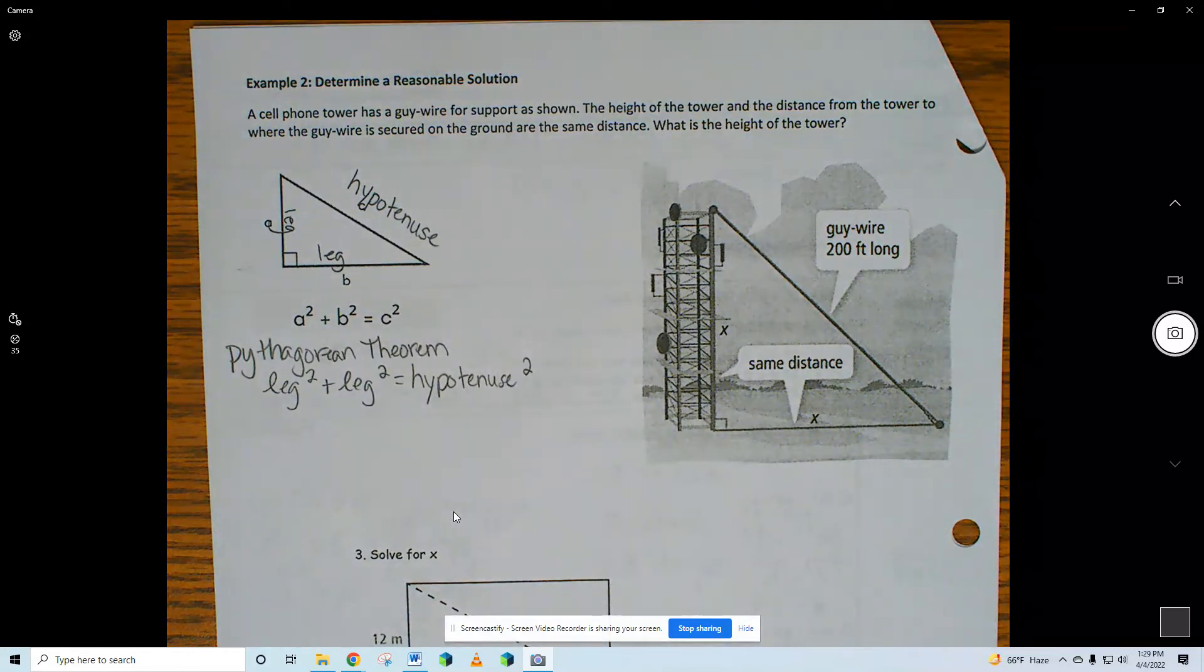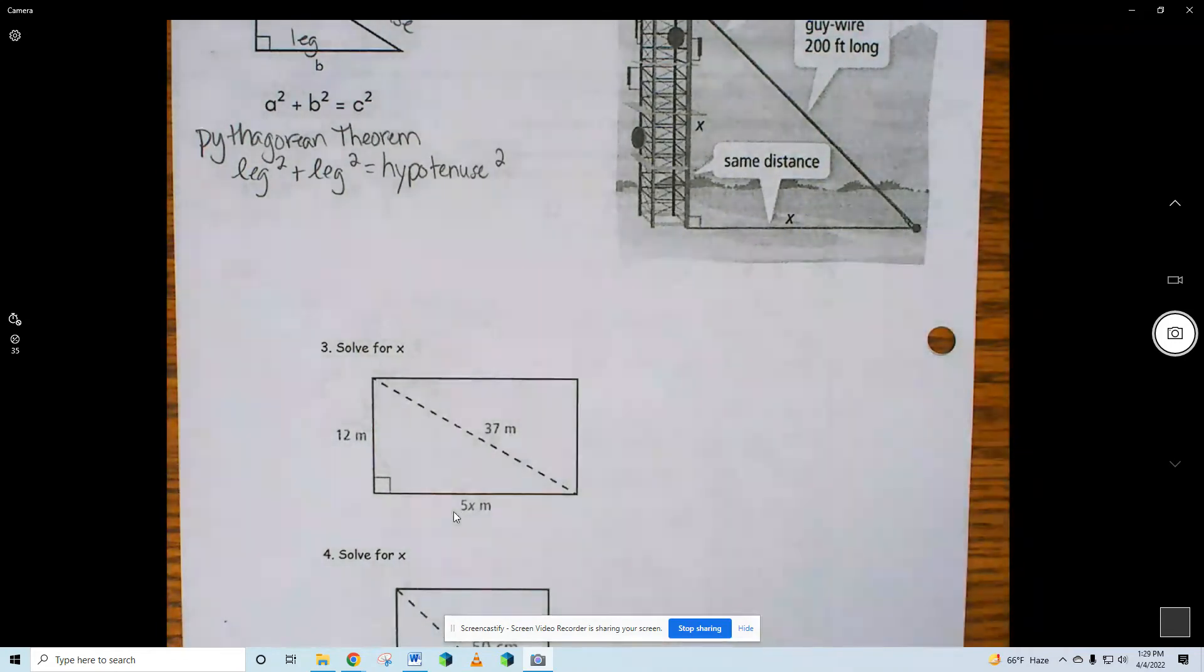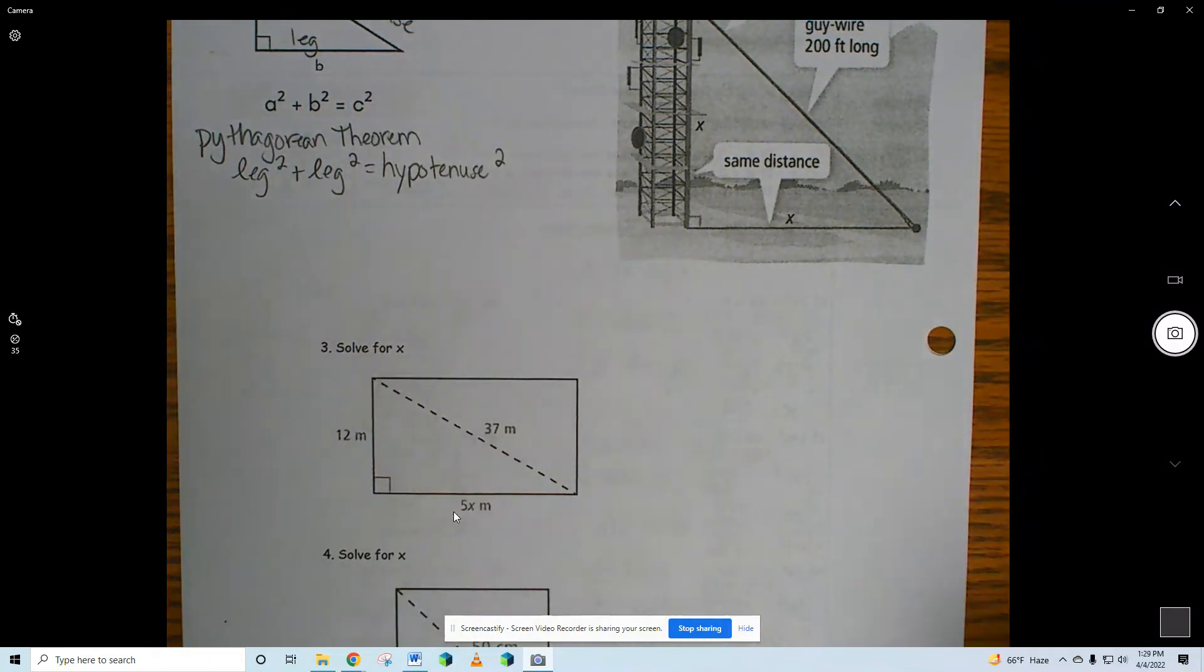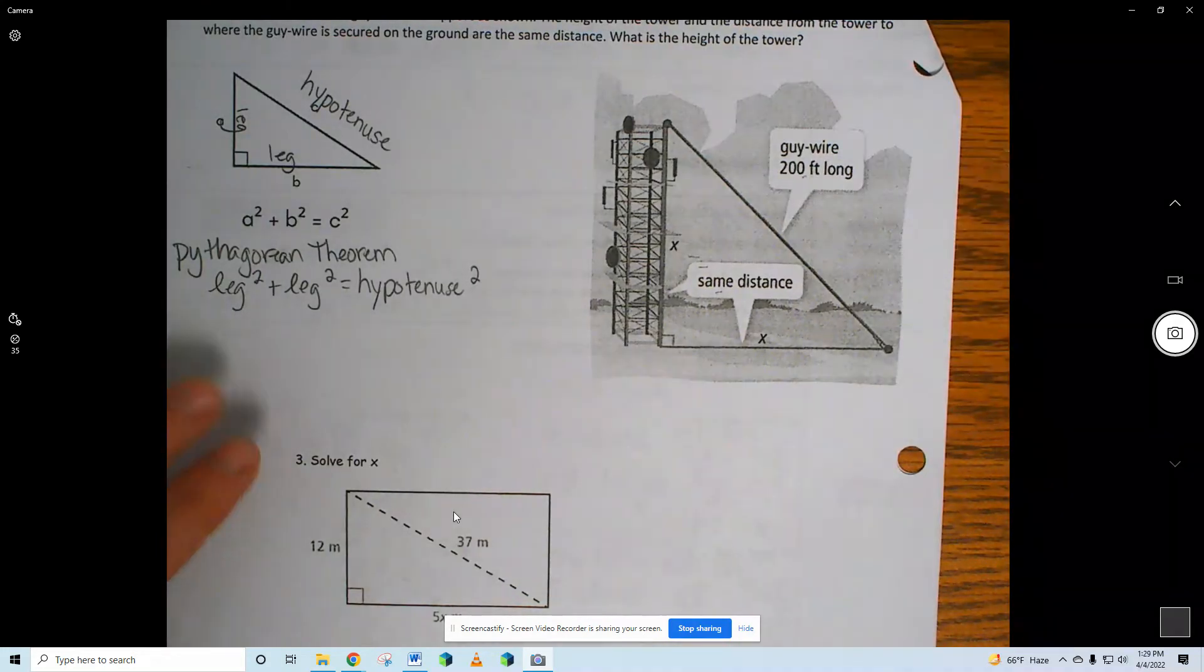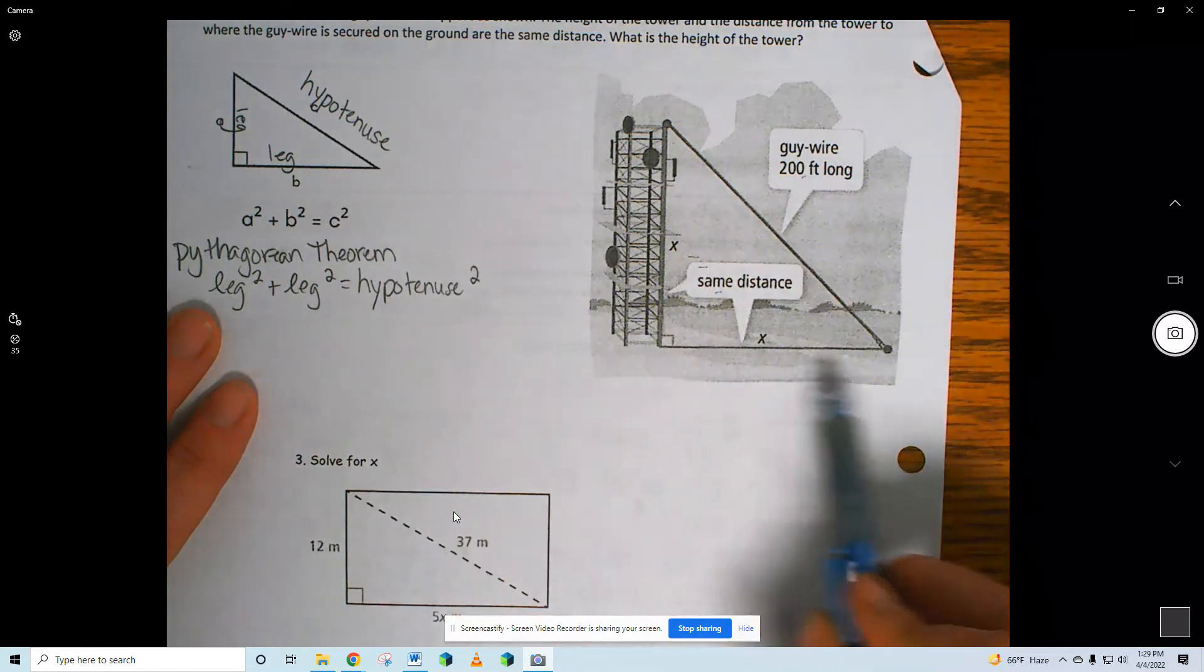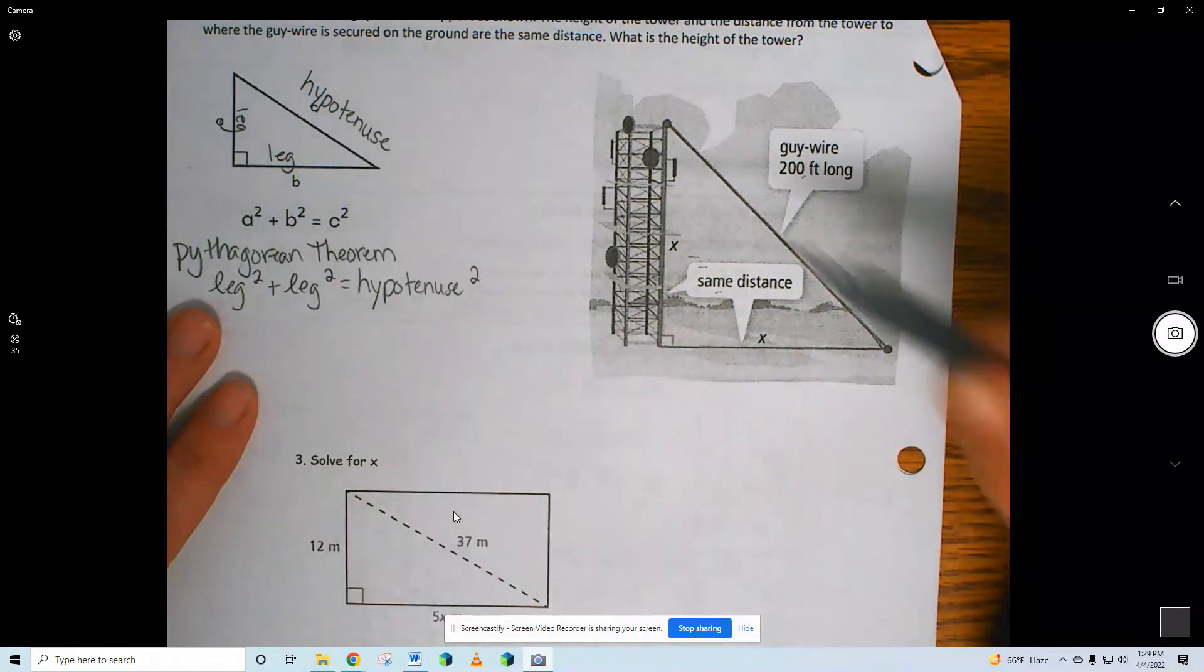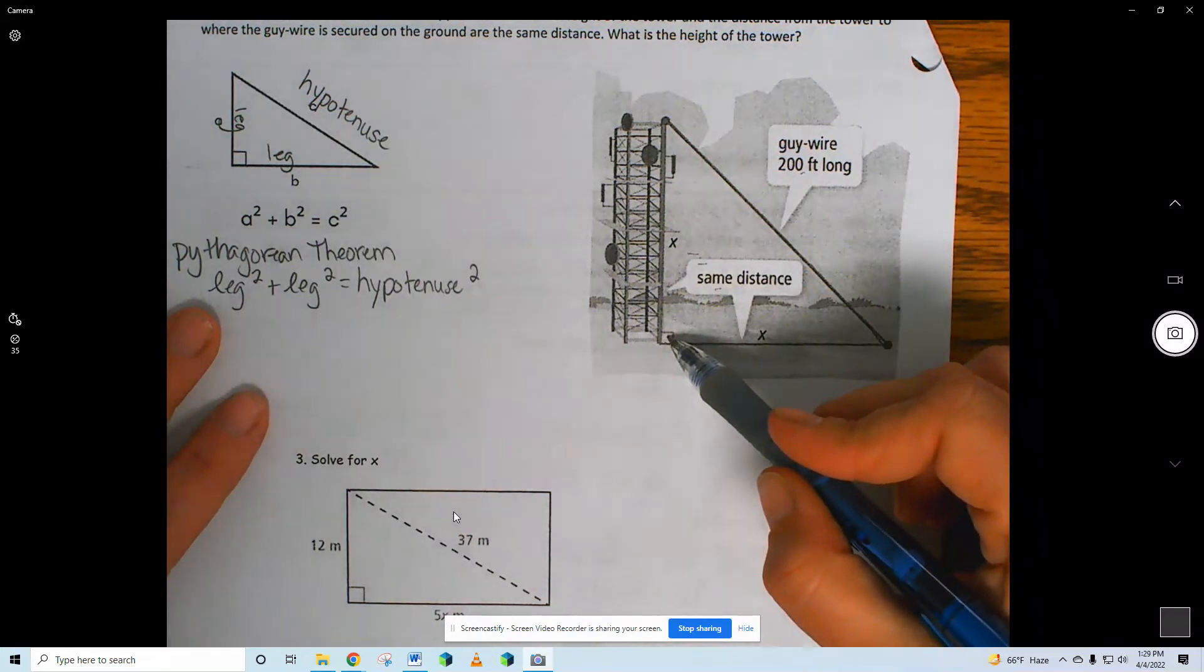What we're going to do is we're going to practice this formula in these two problems, number three and four. If our job is to solve for x, we're just going to set it up like a normal Pythagorean theorem problem. Twelve meters, thirty-seven meters, five x meters. I've got up on top, one of the legs is x squared, one of the legs is x squared, the hypotenuse is 200. So I'm going to set this up. Leg squared plus leg squared equals 200 squared, hypotenuse squared.